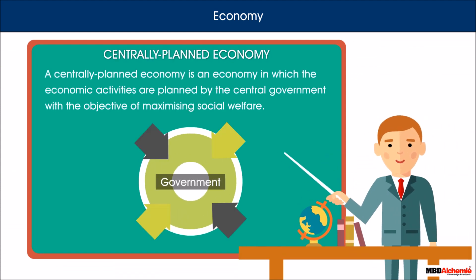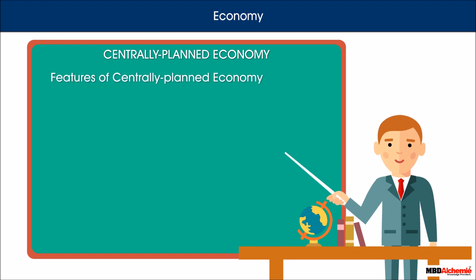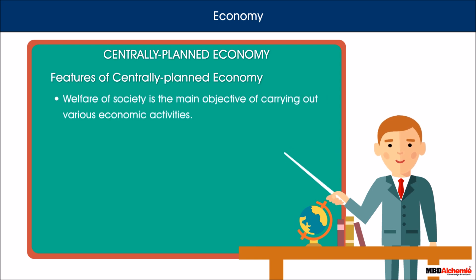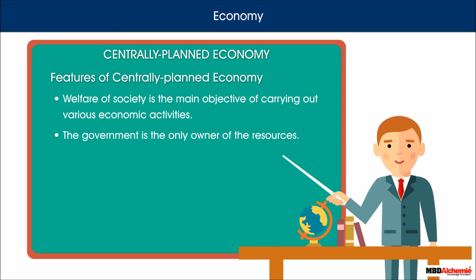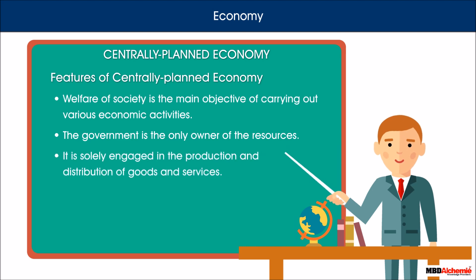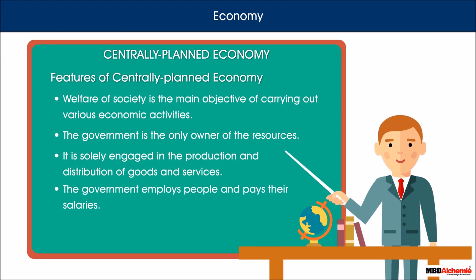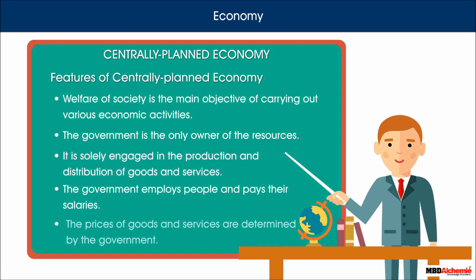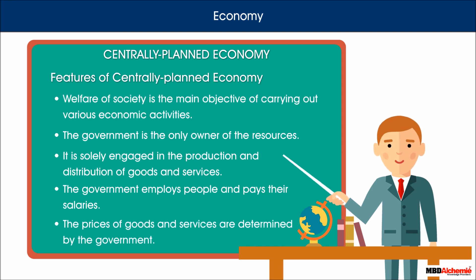A centrally planned economy is an economy in which economic activities are planned by the central government with an objective of maximizing social welfare. Features of a centrally planned economy: welfare of the society is the main objective; the government is the only owner of resources; it is solely engaged in the production and distribution of goods and services; the government employs people and pays their salaries; and the prices of goods and services are determined by the government.